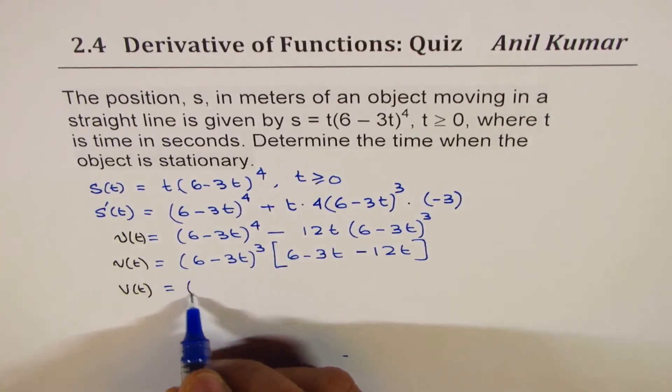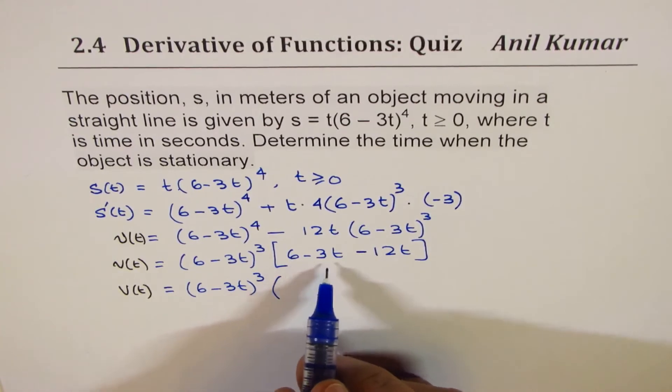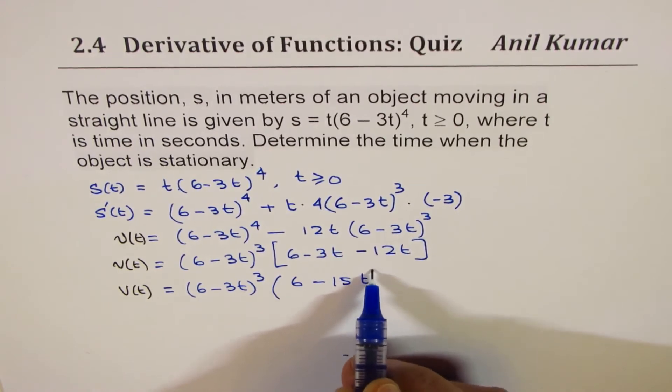So we write this as 6 minus 3t whole cube and here we get 6 minus 15t. Minus 3 minus 12 is 15t.